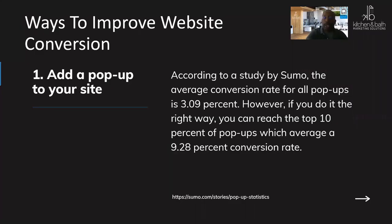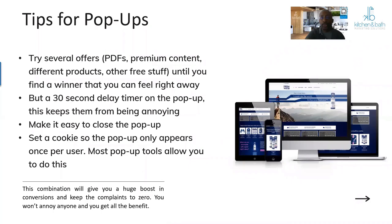One way to improve conversions is adding a pop-up. According to a study by Sumo, the average conversion rate for all pop-ups is 3.09%, but if done right it can go up to 10%. To do it right, try different offers — PDFs, premium content, free offers. To avoid being annoying, trigger the pop-up with a delay of around 30 seconds or when the user scrolls down the page. Avoid having it appear immediately when someone lands on the site.